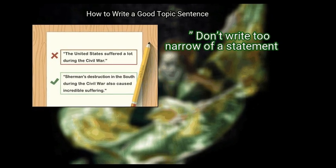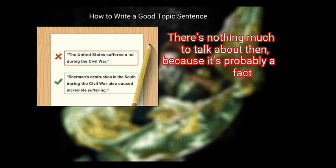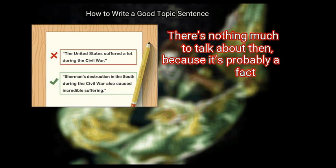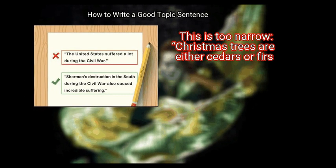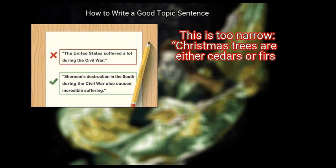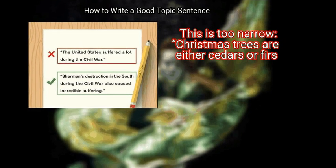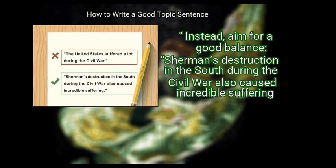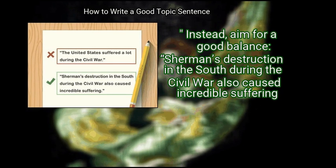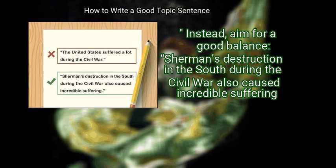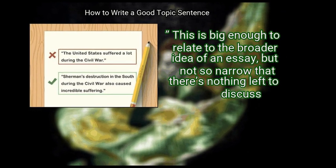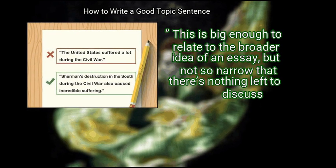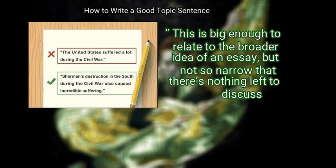Don't write too narrow a statement either, because there's nothing much to talk about — it's probably just a fact. For example, 'Christmas trees are either cedars or firs' is too narrow. Instead, aim for a good balance, such as 'Sherman's destruction in the south during the civil war also caused incredible suffering.' This is big enough to relate to the broader idea of an essay, but not so narrow that there's nothing left to discuss.